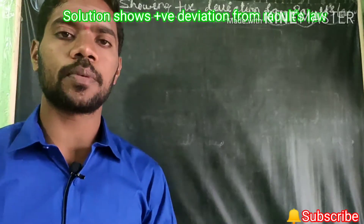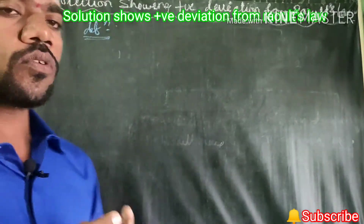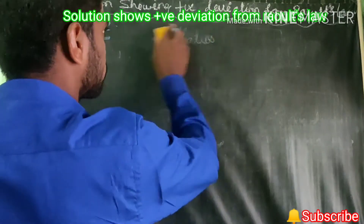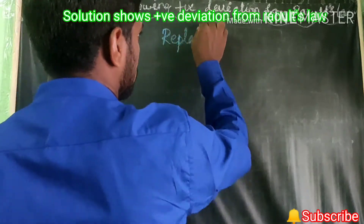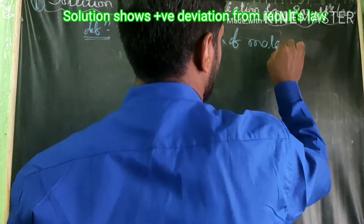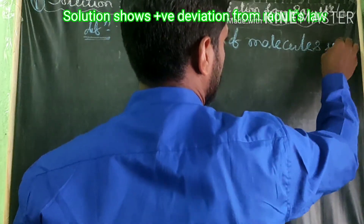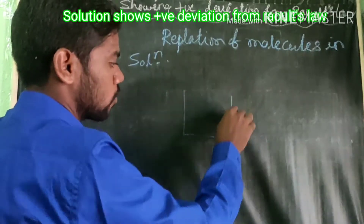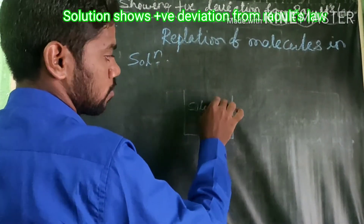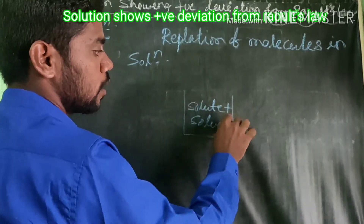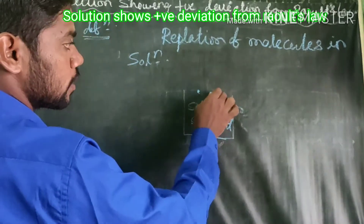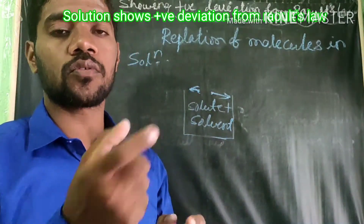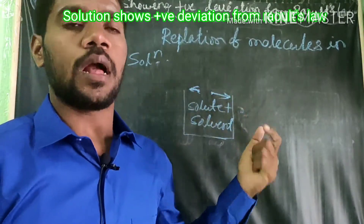The solution showing positive deviation is defined as the solution in which there will be repulsion of molecules. This solution is formed by solute plus solvent, and there will be some repulsion — the particles repel each other. Therefore, the molecules in the solution form a positive deviation from Raoult's law.